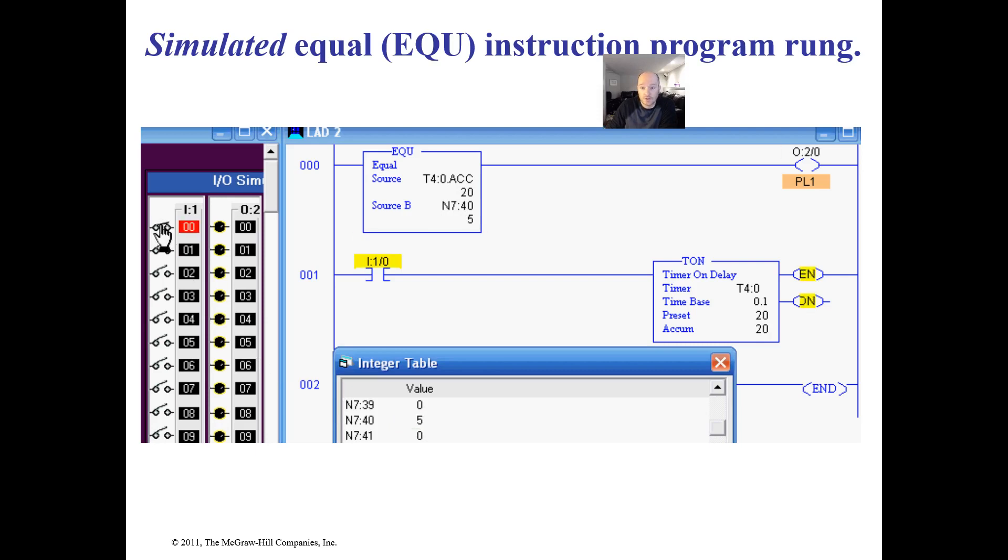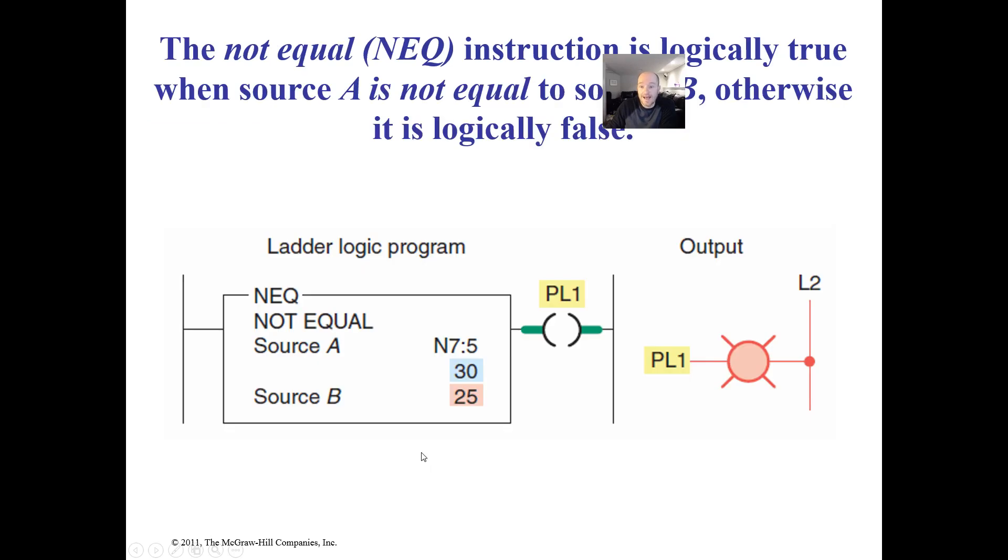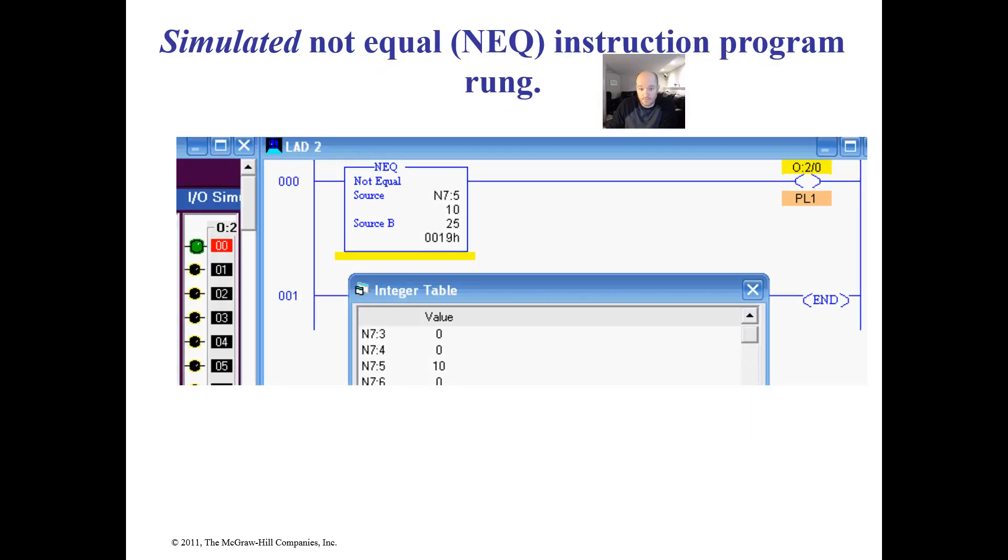The not equal to will only be true when it will only not be true when they are equal. Here we have a 10 and our source B is just 25. It's on all the time unless we equal 25. Again, every situation can be different. People may love this instruction. I find there to be more eloquent ways to do it, but that's just me.